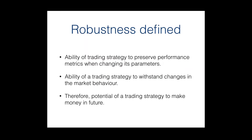Now we can provide a definition of robustness applied to trading strategies. We consider robustness in two aspects: as the ability of a trading strategy to preserve its performance metrics when we change the values of its parameters, and as the ability of a trading strategy to withstand changes in the market environment, which in turn affect price behavior. As an immediate corollary from this definition, we can see that robustness is the key concept in systematic trading, and perhaps the only one which allows us to say anything about the possible future performance of a strategy.